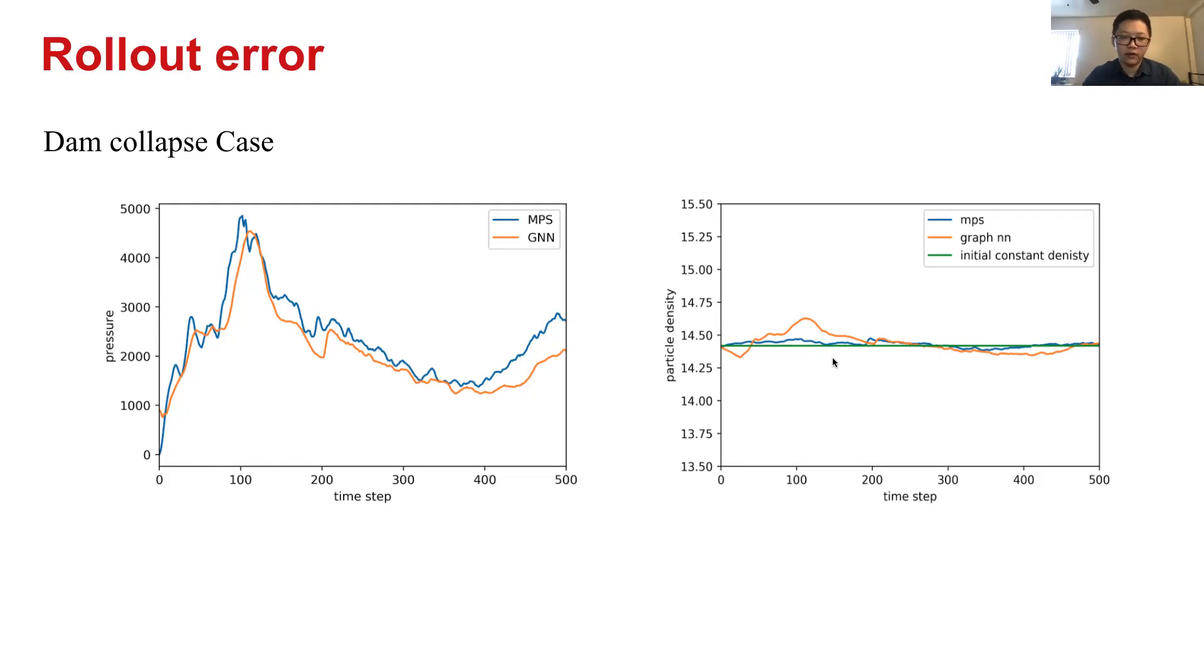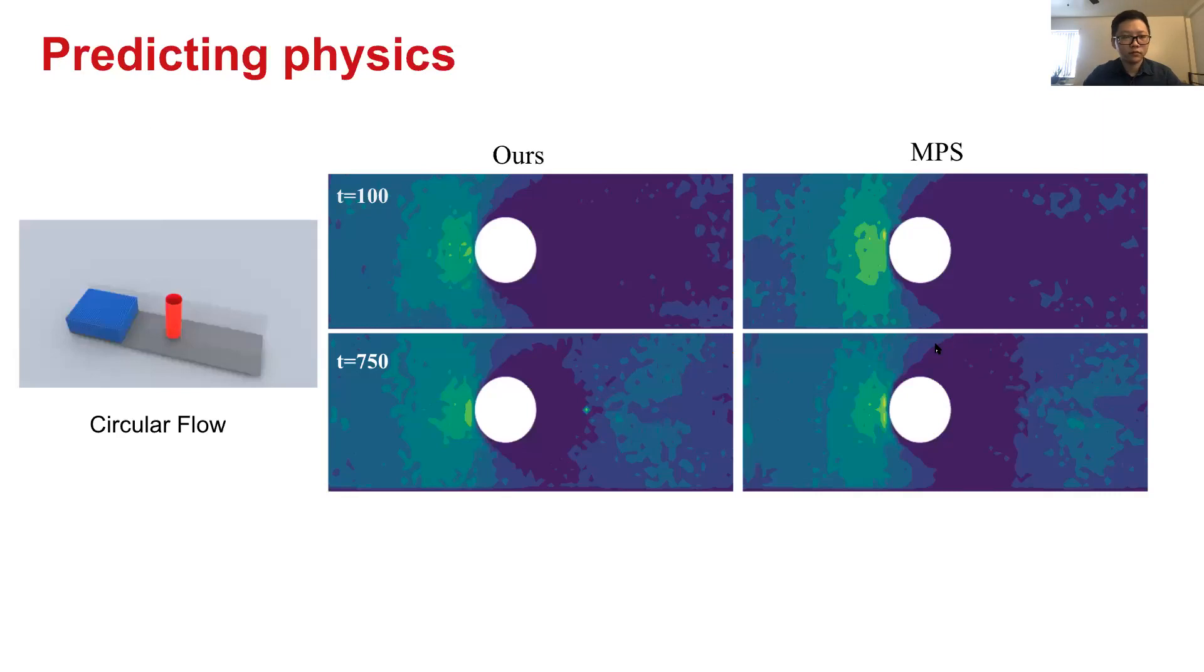And also in terms of maintaining a constant density field, here we are simulating incompressible flow. We can see that our network's result, that the orange line here, also is maintaining a consistent low error level with the initial constant density.